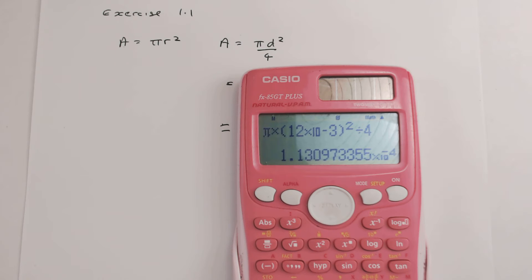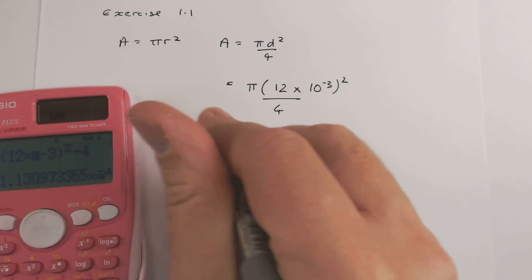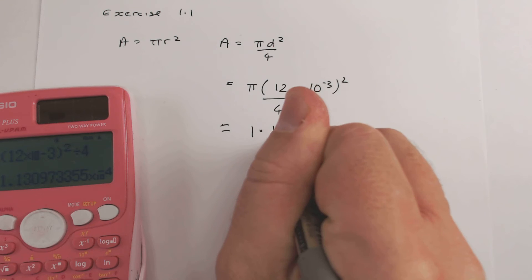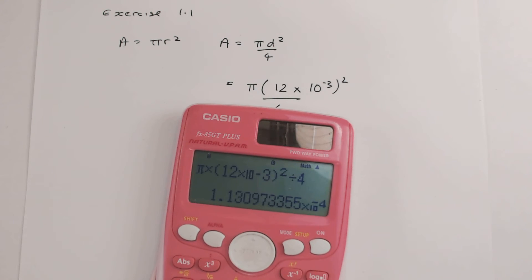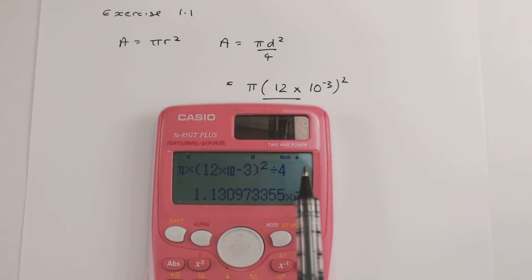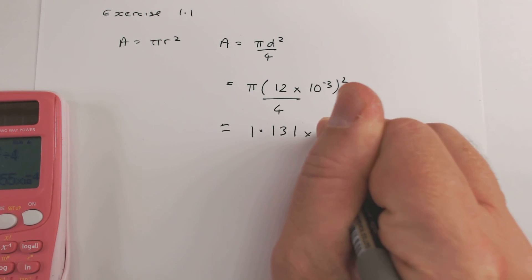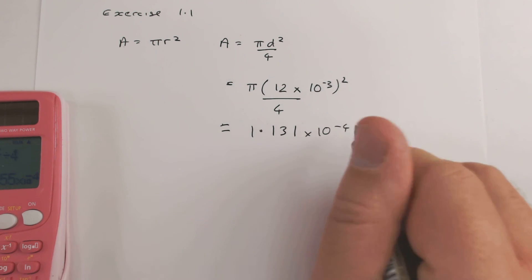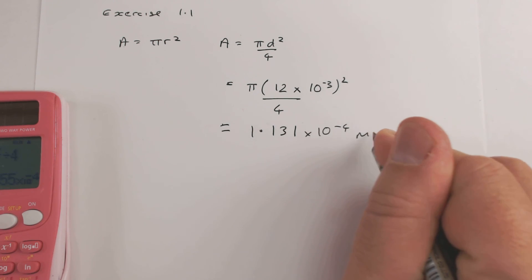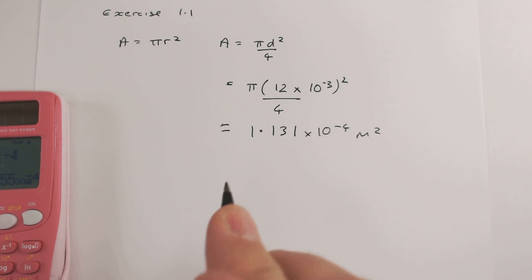of 1.131. Now let's look at the other bit that's important: the times 10^-4. I've worked in meters, so that's going to be meters squared. So that's my answer.